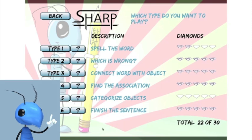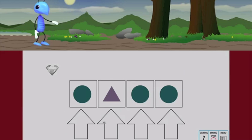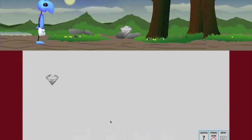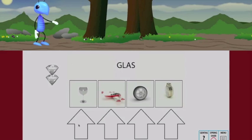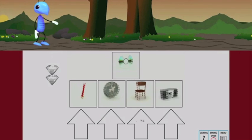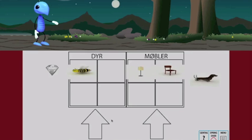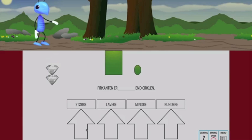Help me collect diamonds throughout the levels by solving several challenges. For instance, by spelling the name of an item, spotting which of the items that does not fit in, connecting words with items, associating two items with each other, dividing a set of items into their respective categories, or by finishing a sentence.